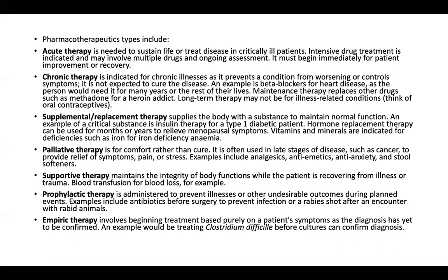Replacement therapy supplies the body with a substance to maintain normal function. An example is insulin therapy for type 1 diabetic patients. Hormone replacement therapy can be used for months or years to relieve menopause symptoms. Vitamins and minerals are indicated for deficiencies, such as iron for iron deficiency anemia. Palliative therapy is for comfort rather than cure; it is often used in late stages of disease such as cancer. It provides relief of symptoms like pain or stress — examples include analgesics, anti-emetics, anti-anxiety agents, and stool softeners.